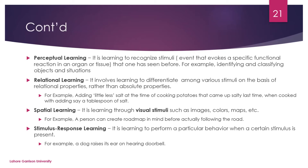Perceptual learning involves the senses — things we feel or sense. When we do something again, our mind recalls what we did before. For example, when cooking with salt, the next time we cook, we remember the previous experience. There is also relational learning involving visual stimuli — like traffic signals while driving. Next time you see a sign on the road, you will recognize it. The last type is stimulus-response learning.